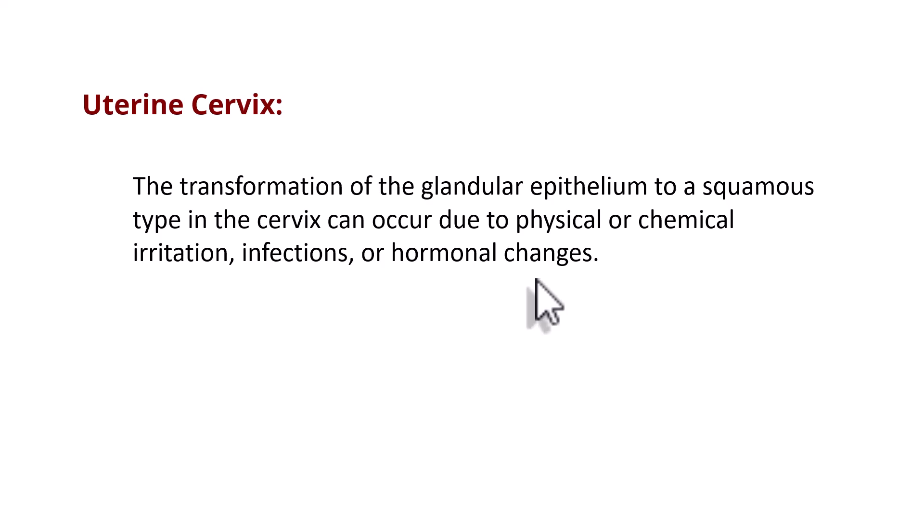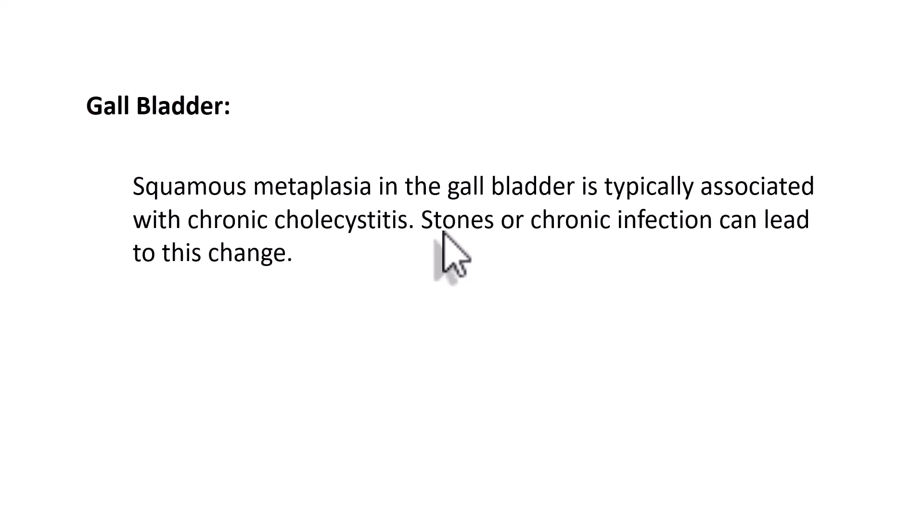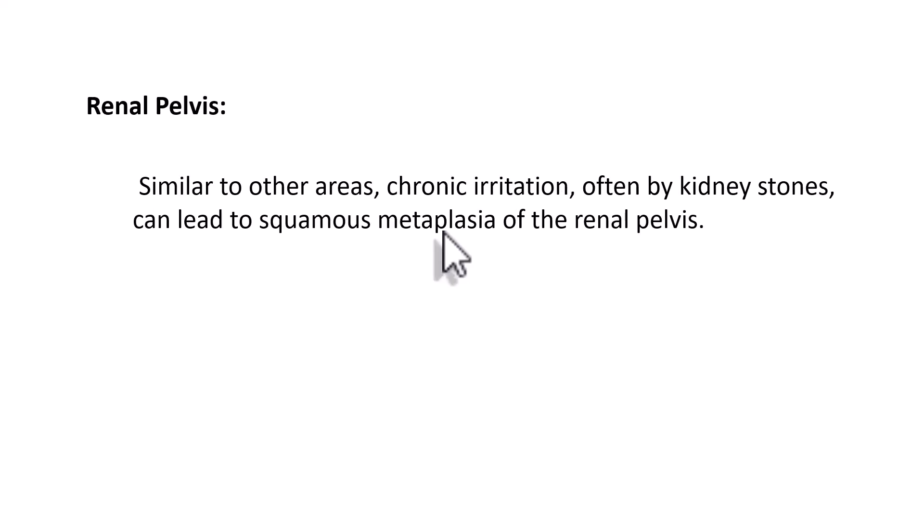In the uterine cervix, because of infections, irritations, and hormonal changes, the glandular epithelium of the endocervix gets converted to squamous epithelium — that is called squamous metaplasia of the cervix. In the gallbladder, gallstones irritate the columnar epithelium, and the precursor cells are reprogrammed to convert it to squamous metaplasia. Similarly in the renal pelvis, chronic irritation often by kidney stones leads to squamous metaplasia of the transitional lining epithelium.